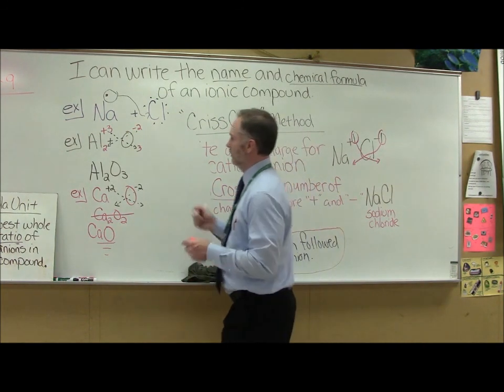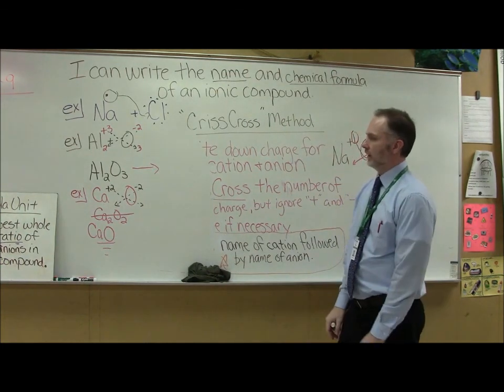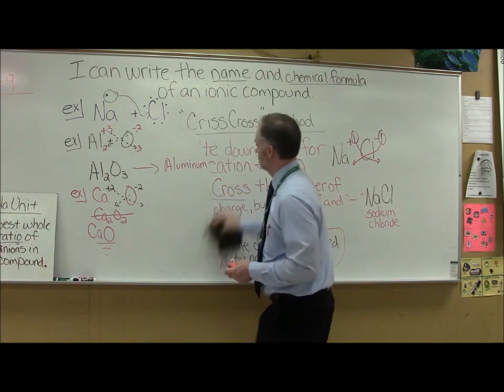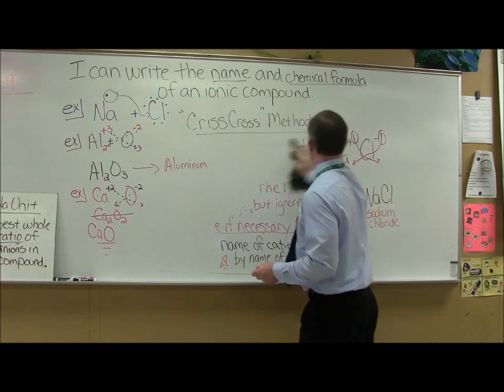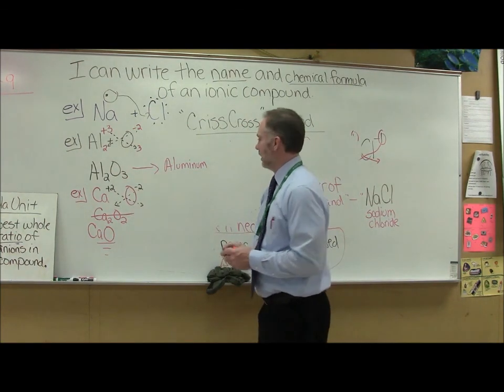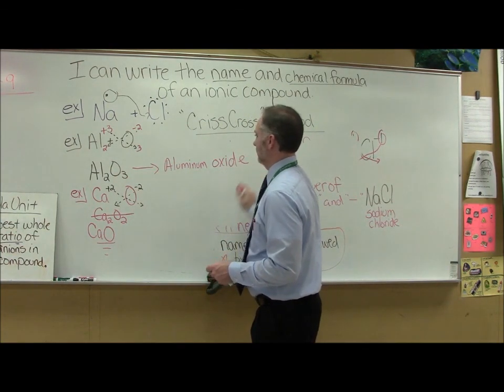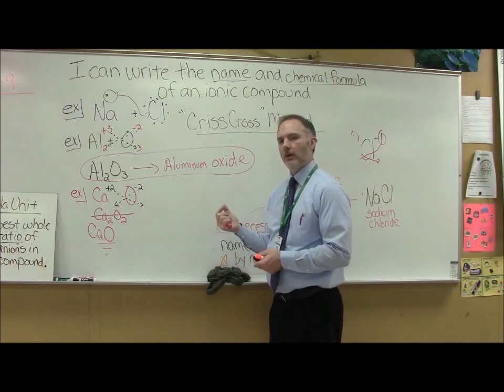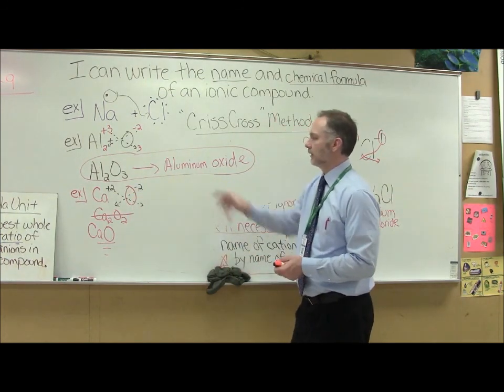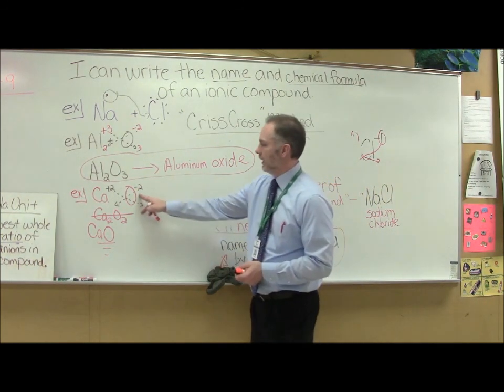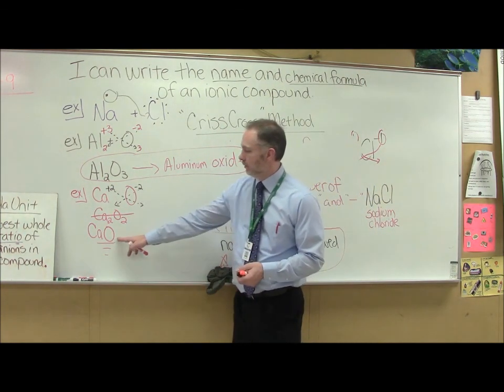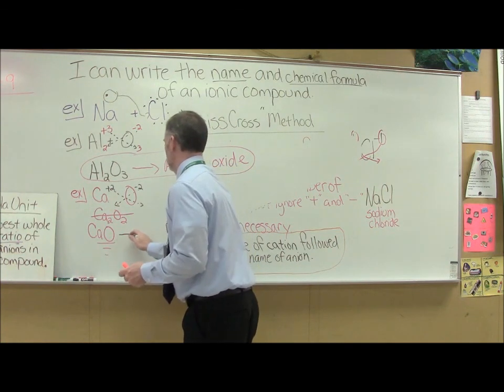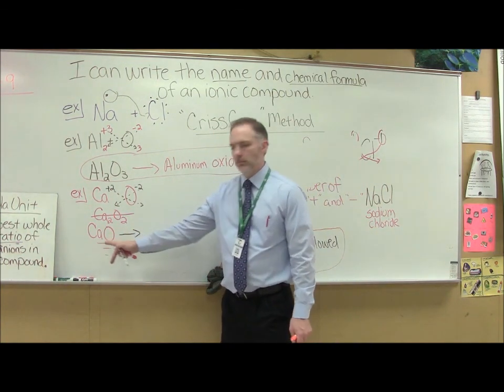So let's write the name now for Al2O3. Name of the cation is aluminum, the name of the anion is oxide. When aluminum and oxygen form an ionic compound its formula is Al2O3 and it's called aluminum oxide. So now calcium and oxygen when they come together, its formula is CaO, and this is called calcium oxide.